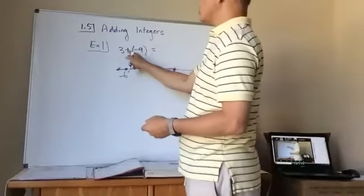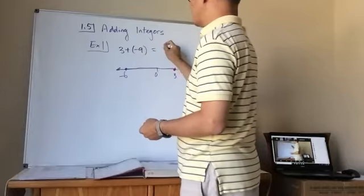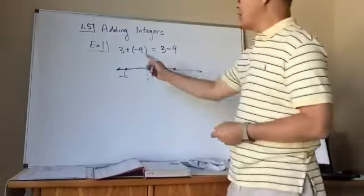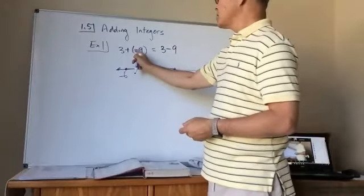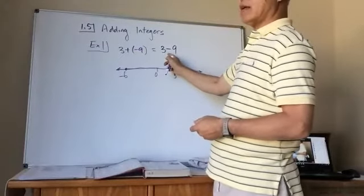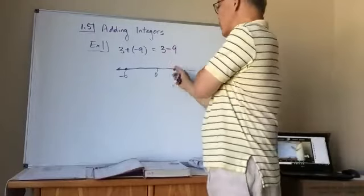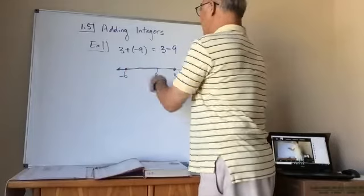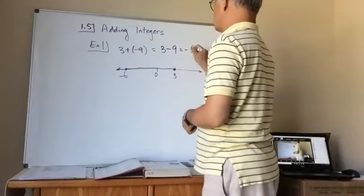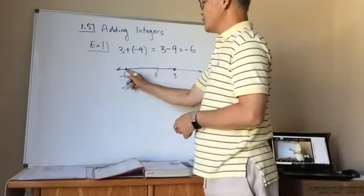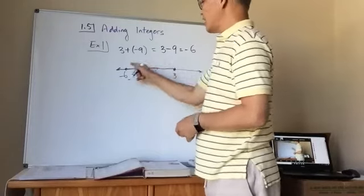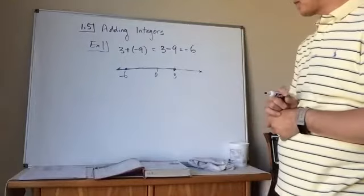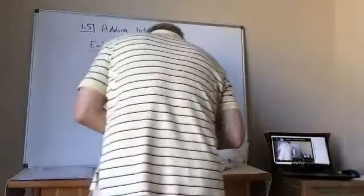The way we get there: 3 plus negative 9 is the same as 3 minus 9. A plus and a negative becomes a minus, so 3 minus 9 means going 9 to the left, giving us negative 6. From 3 to negative 6 is a total movement of 9.